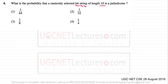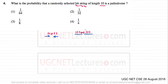Let's see when we can say a string is a palindrome. If we have a string like '1 1 0 1 1', this is a palindrome because you read the same string from left or right. Similarly, '1 1 1 0 0 1 1 1' is also a palindrome. The difference is that the first string is of odd length and the second is of even length.